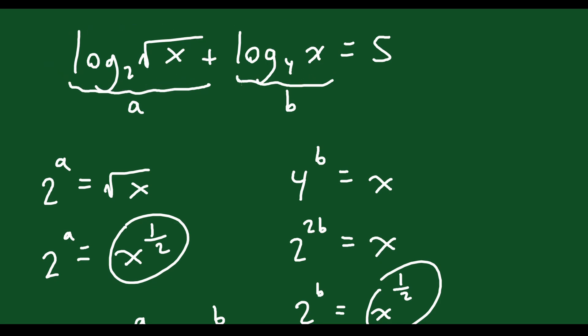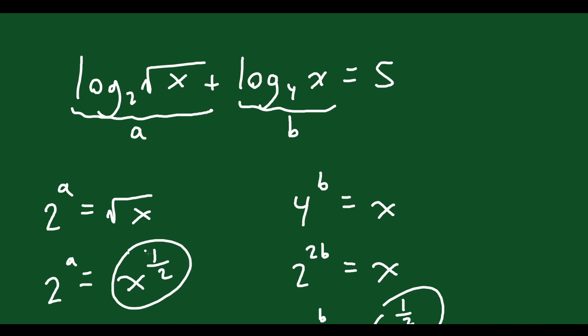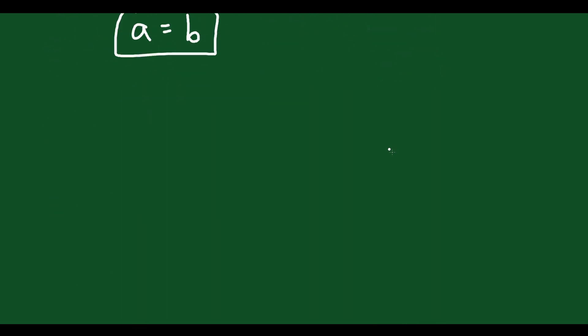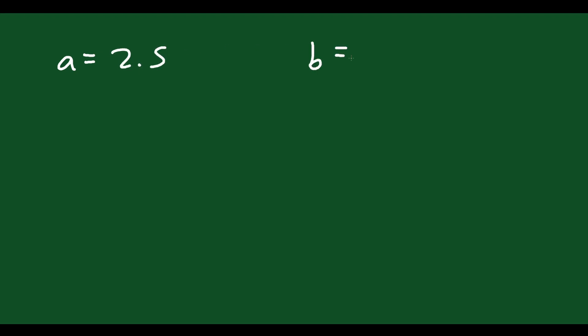and a and b are these two log expressions, then those two things must equal each other. If these two things are the same and they add up to 5, then they must both be half of 5. If something plus something equals 5 and they're equal to each other, they both must be half of 5 — it's the only way. So a, the first term, equals 2.5, and b, the second term, is also equal to 2.5.